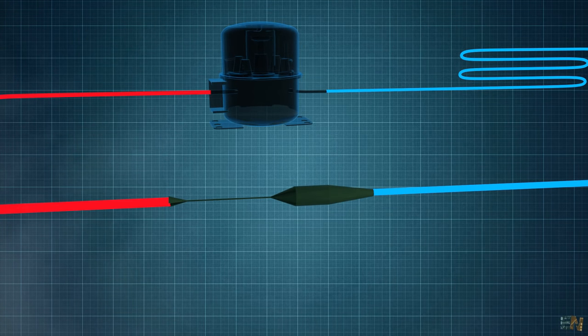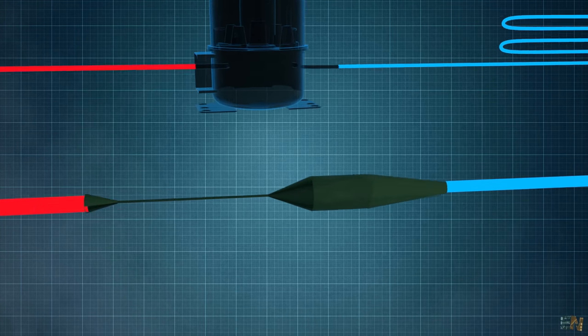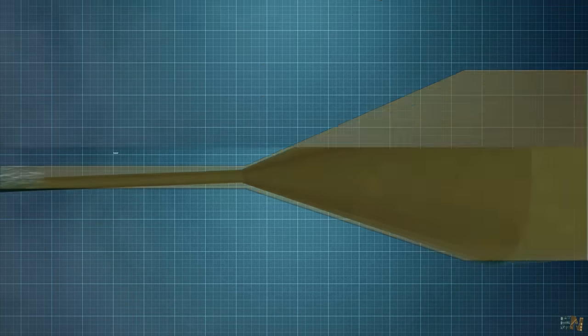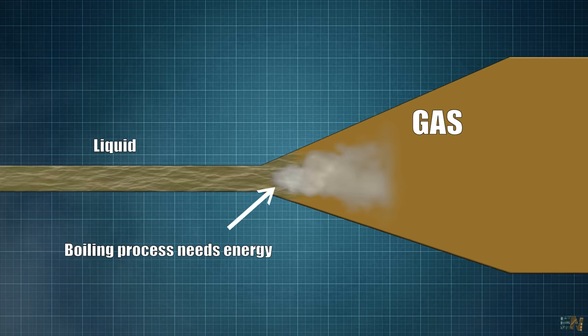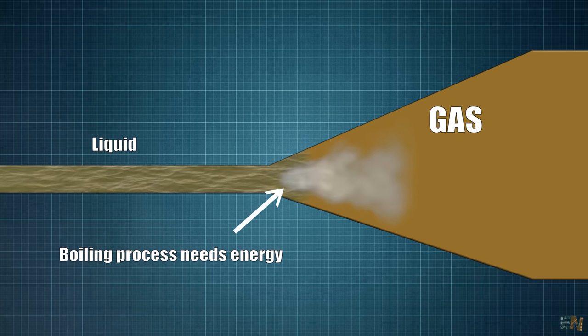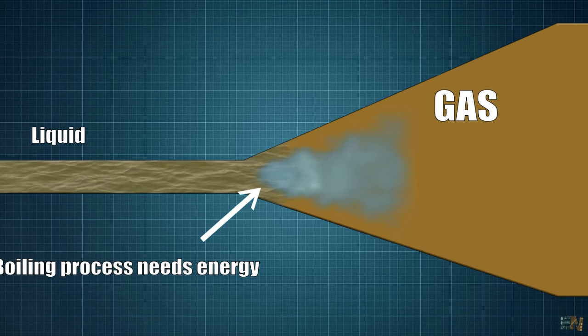Anyway, when the pressure drops, the boiling point of the refrigerant also drops and the liquid will turn into a gas. So that means that some energy was supplied to the system. This energy will come from the liquid itself so when the refrigerant loses energy, that means it will get colder.